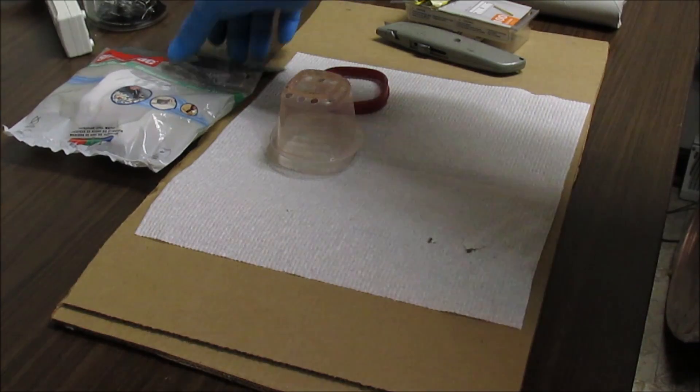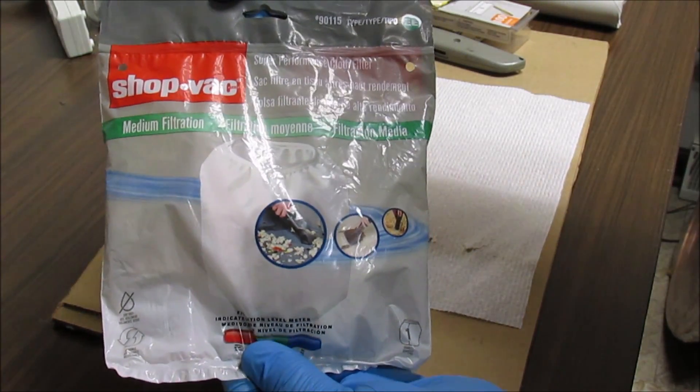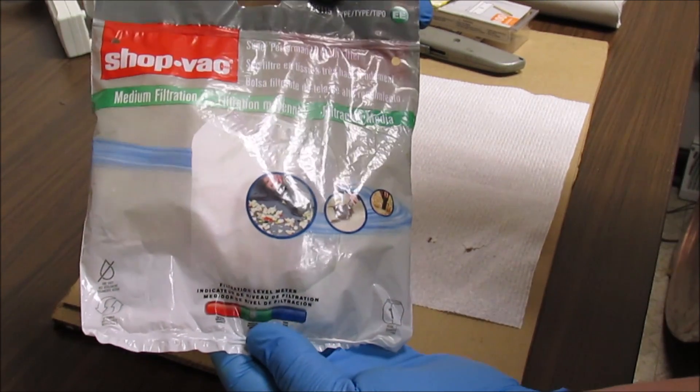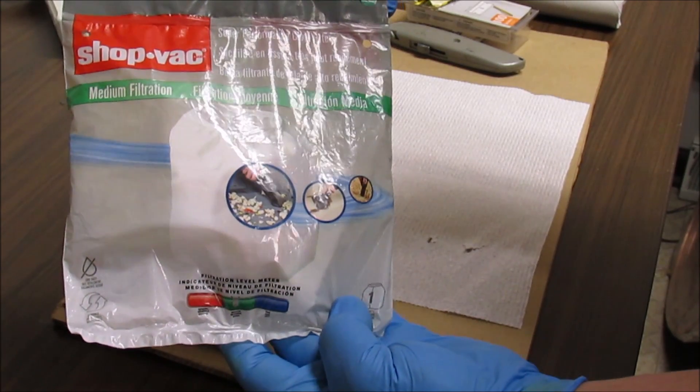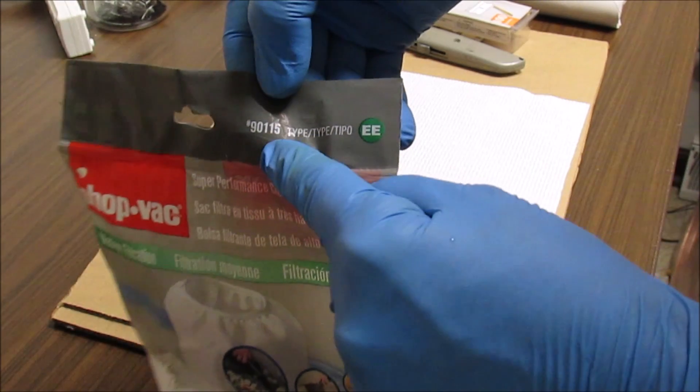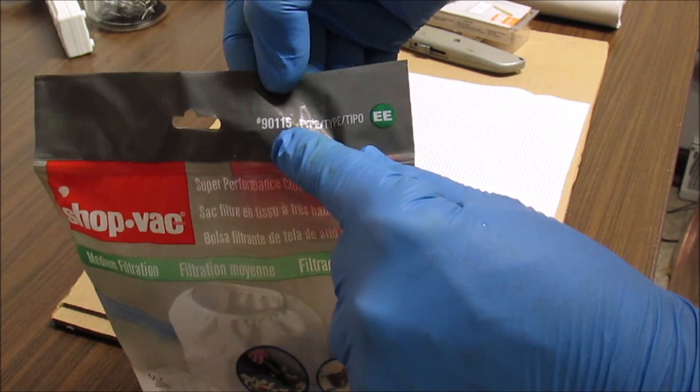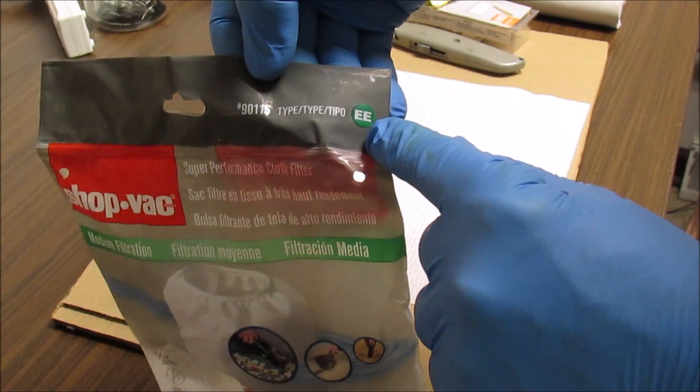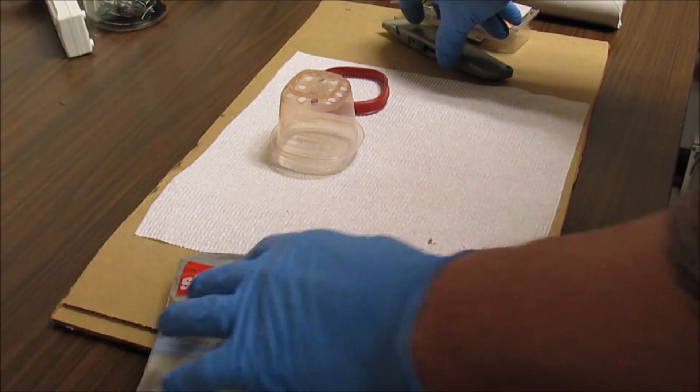Okay here is our anode filter. It is a shop vac filter for a wet dry vac. There's the number on it, that's the one I use. I bought this one at Lowe's, it's 90115 type echo. I'm just going to take this out of here. Here's our anode filter, Dacron material, it's perfect for the silver cell.